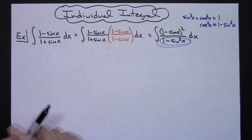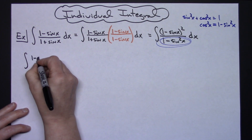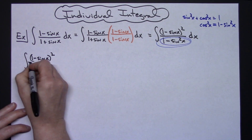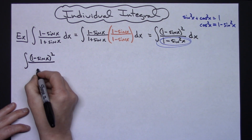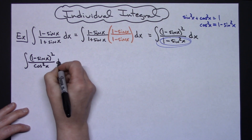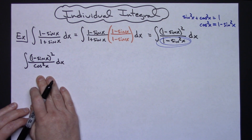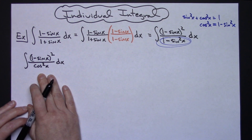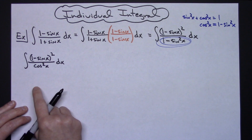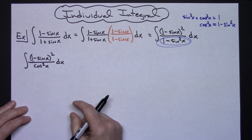So I'm going to make that substitution. We'll have the integral of (1 minus sine x) quantity squared on top, and substituting on the bottom I'll have cosine squared x, dx. Now I have a single entity on the bottom, which is a good thing. What I can do next is go ahead and square what's on the top and then break that up into individual integrals.